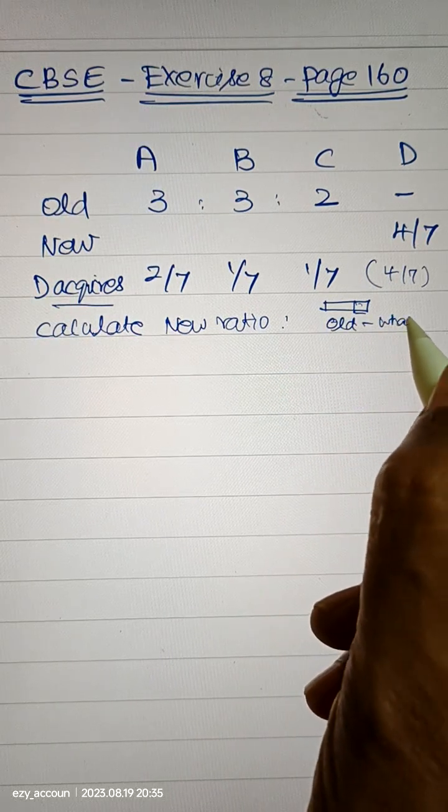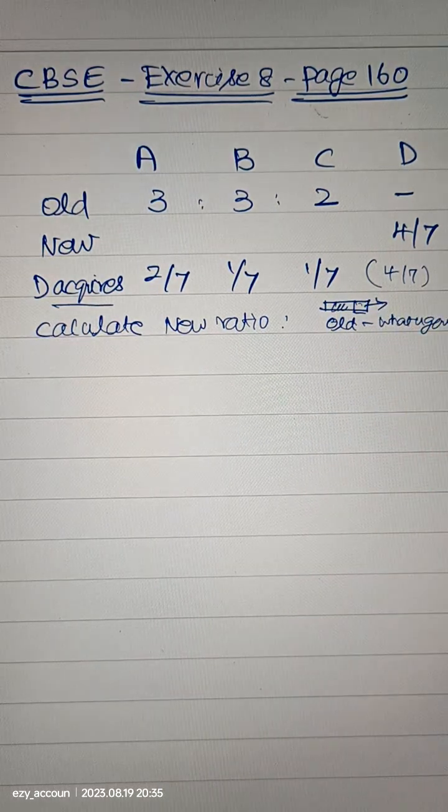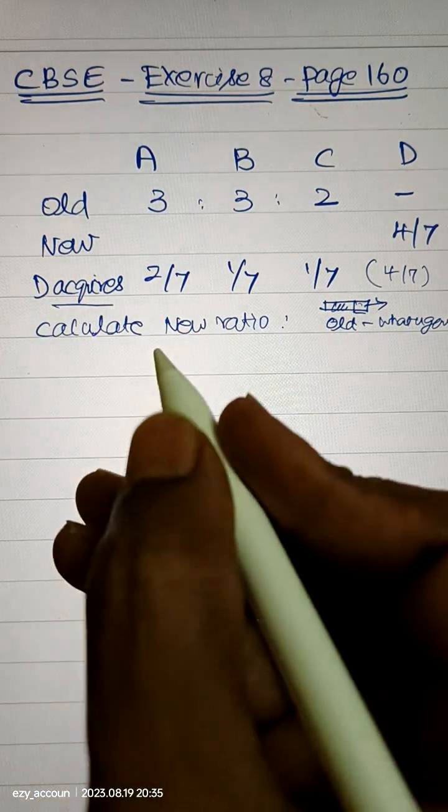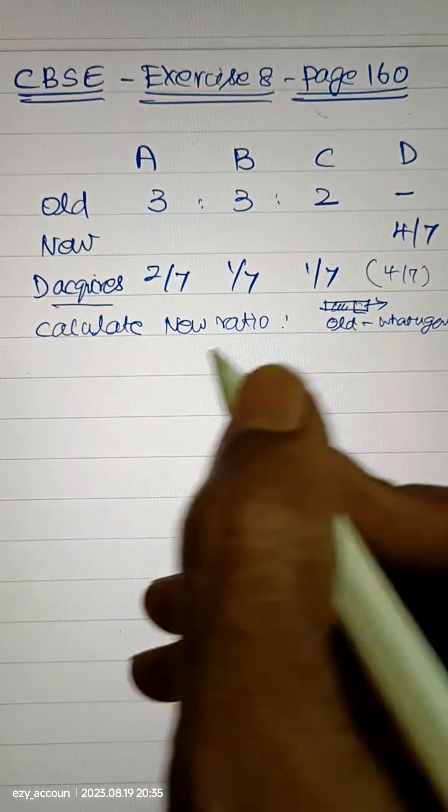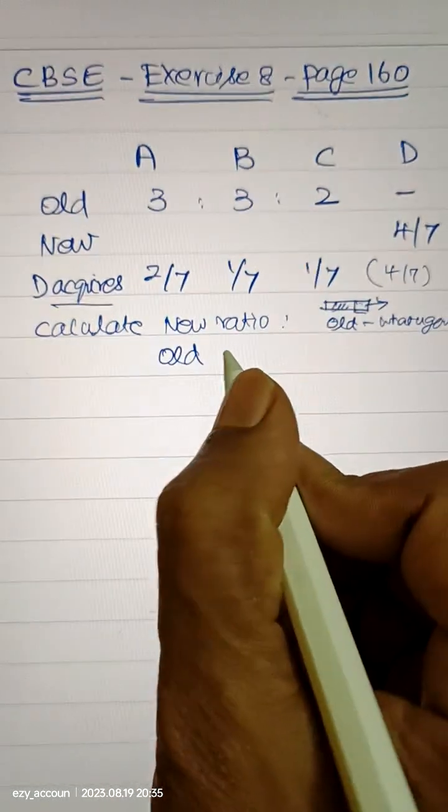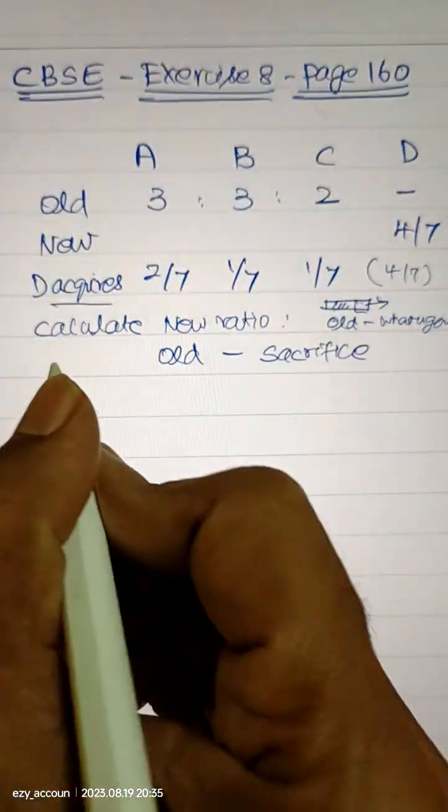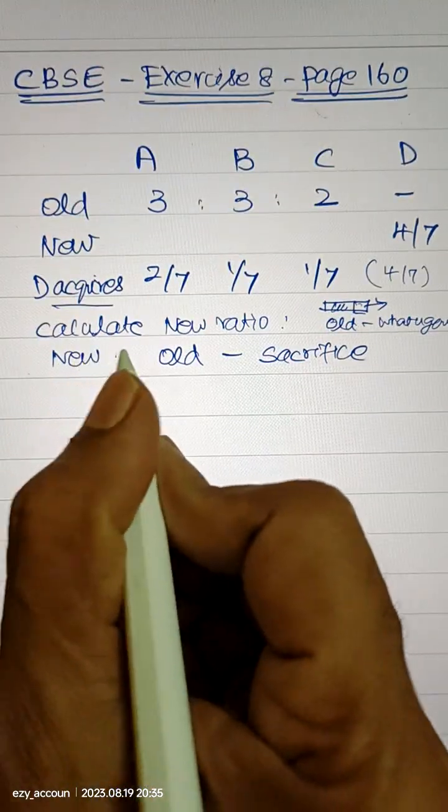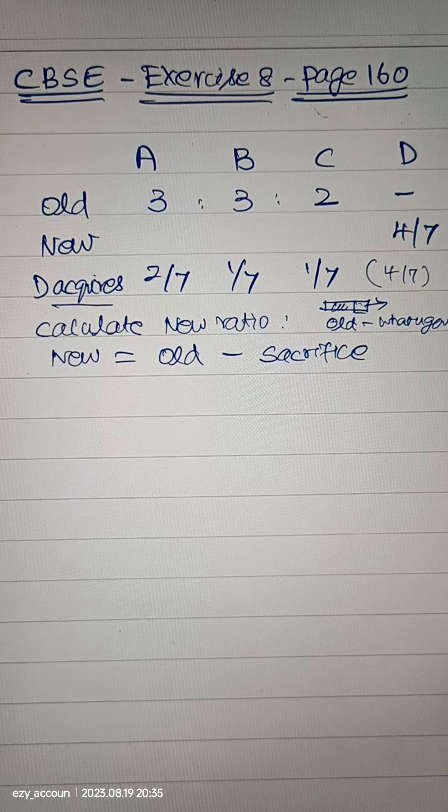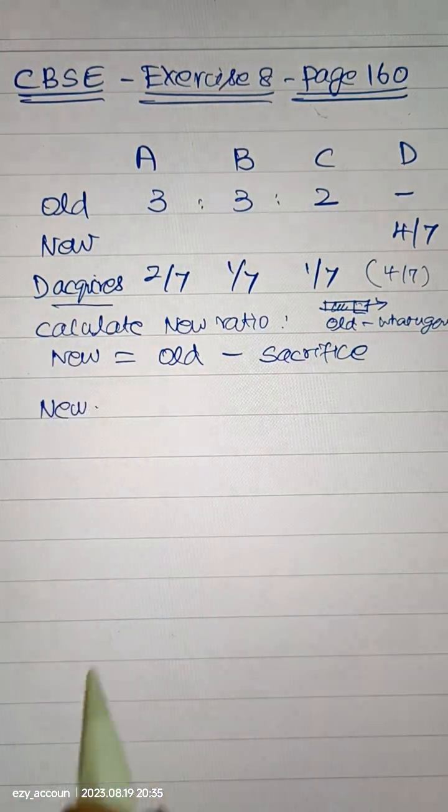So the new one is your old one minus what you gave. This one belongs to you and this one goes to another person. So in the same analysis, old ratio minus what you sacrifice, that is equal to new ratio.